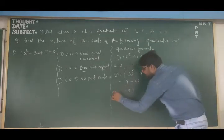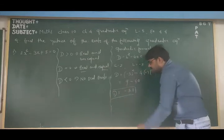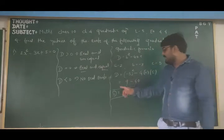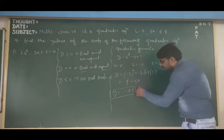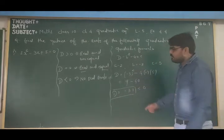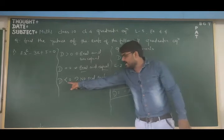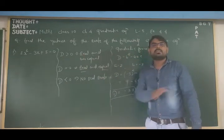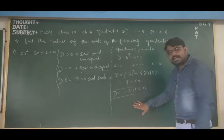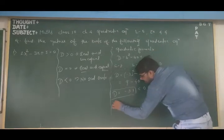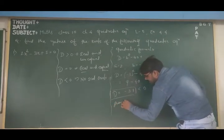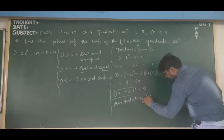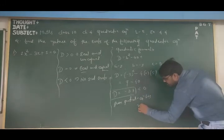Look — D equals minus 31, which is less than zero. So we can say that the given quadratic equation has no real roots. We simply write: given quadratic equation has no real roots. That is the complete solution for this example. Whenever we get D less than zero, there is no need to go further.